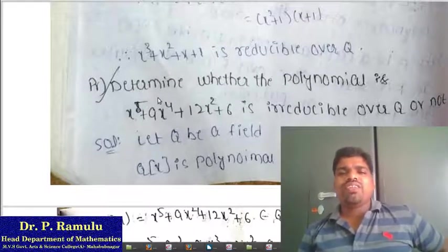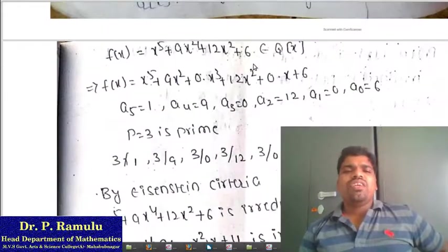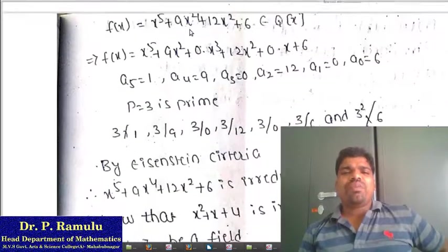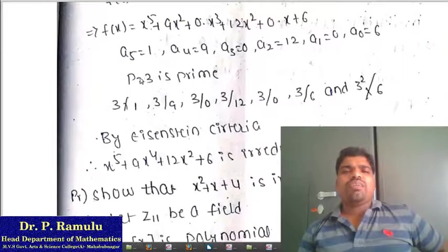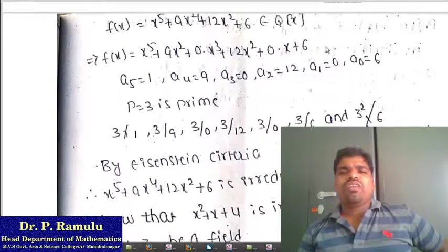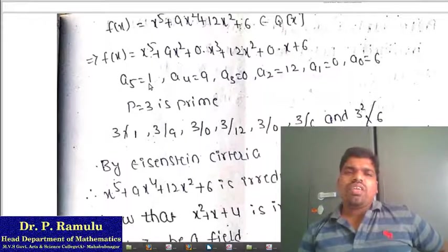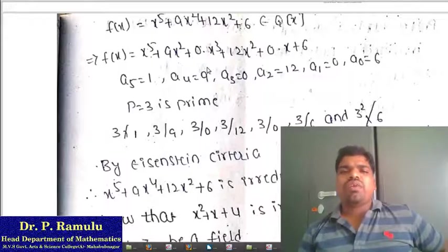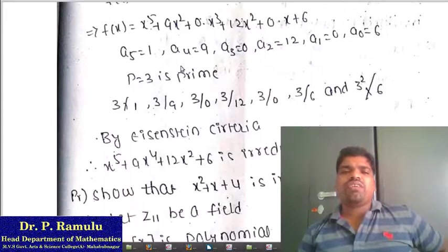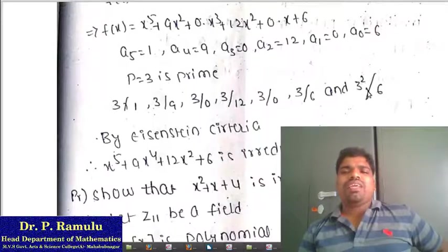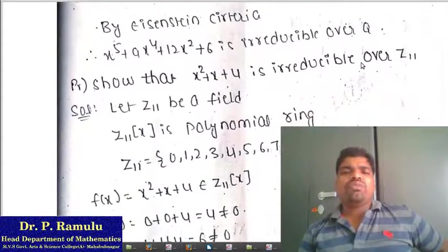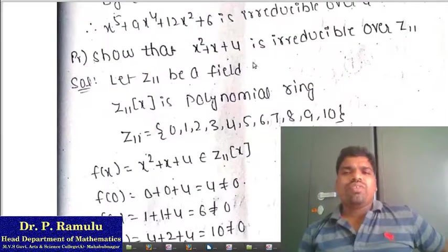To determine whether a polynomial is reducible or not, you can apply Eisenstein criteria. The key is to choose the prime number p carefully — it must divide the relevant coefficients. You need to choose a prime number which divides certain coefficients, applying Eisenstein criteria to show the polynomial is irreducible over Q.